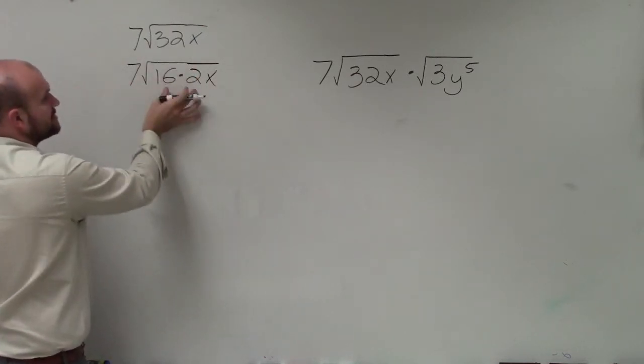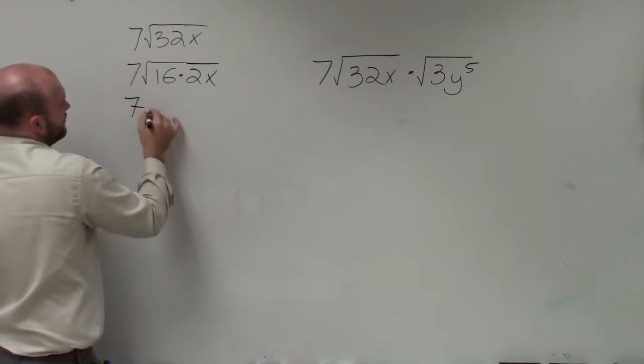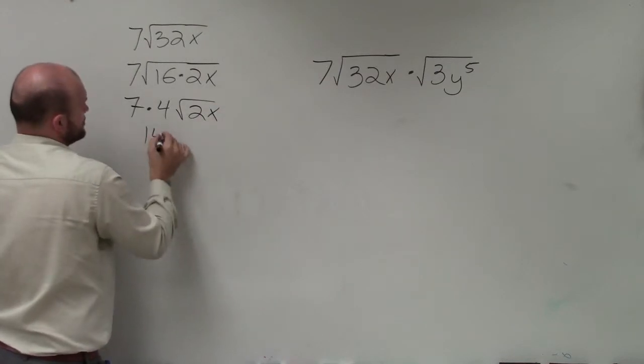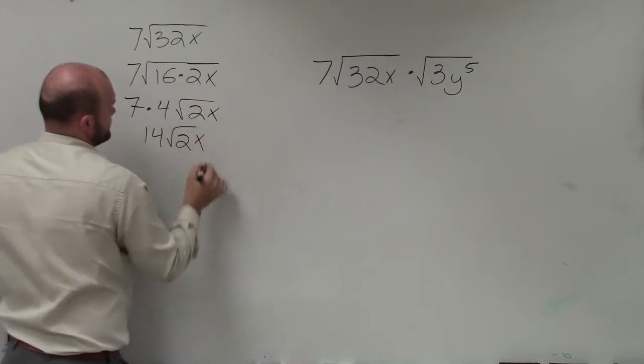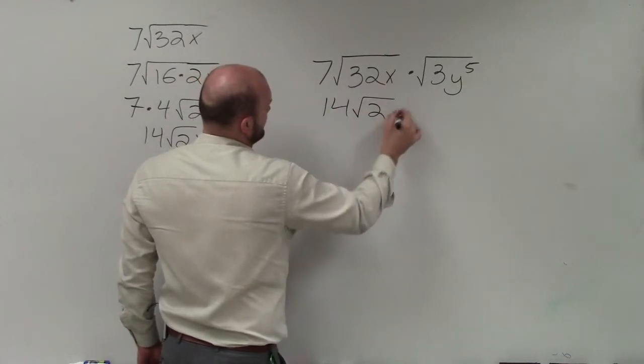And the reason why it's nice to break up 32 into 16 times 2 is because I know what the square root of 16 is, that is 4. So now I have 7 times 4 times square root of 2x, which is 14 times the square root of 2x. So therefore, I have 14 square root of 2x.